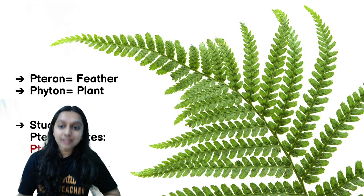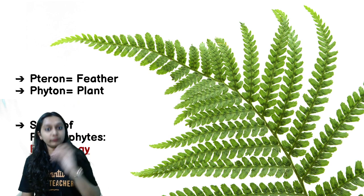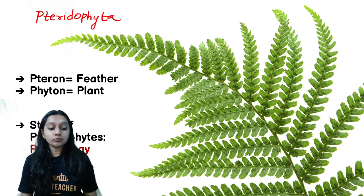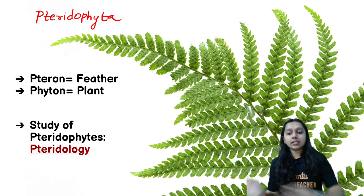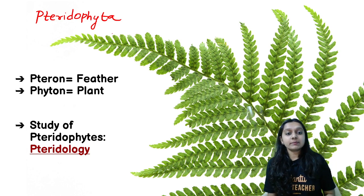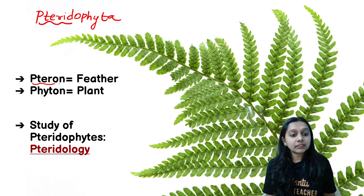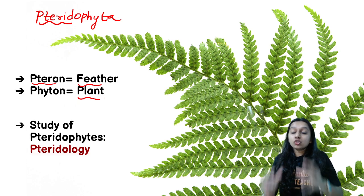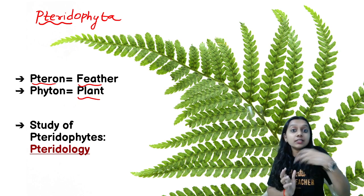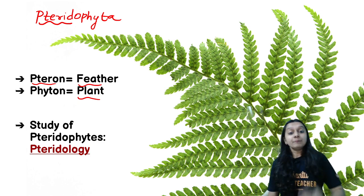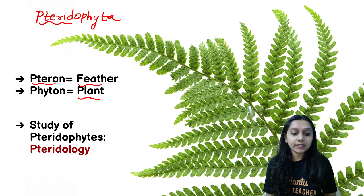Now let's look at Pteridophyta. Pteridophyta is broken down like this: the word 'pteron' means feather, and 'phyta' means plant — so Pteridophyta is a plant that is feather-like. These plants have characteristic feather-like leaves. The study of Pteridophyta is called Pteridology.